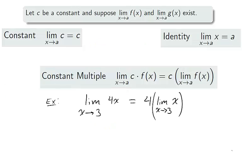If the limit of f exists, then the constant multiple law says that a constant can be multiplied to the function before or after the limit is taken. Since we know the limit of f exists, 4x approaches 12 as x approaches 3.